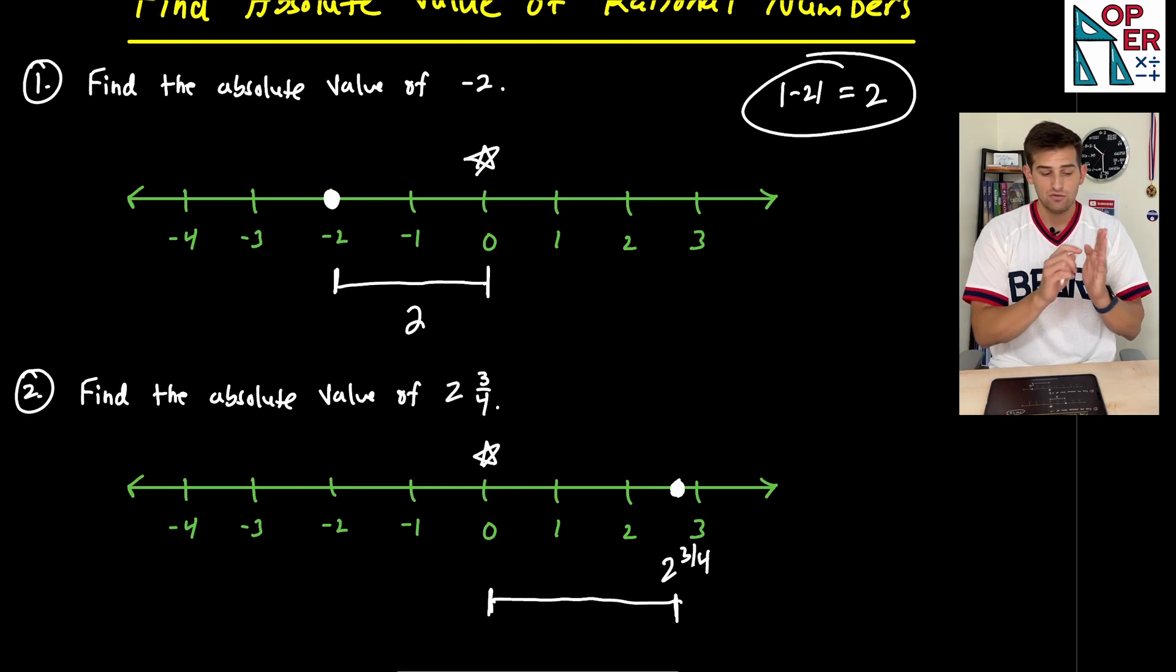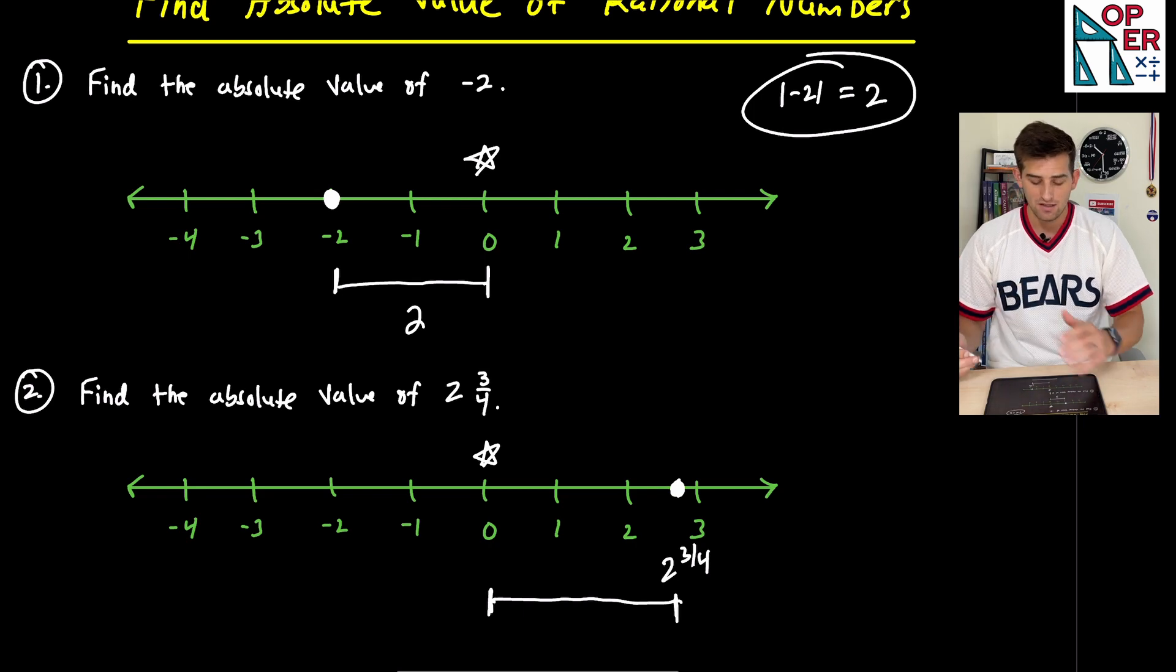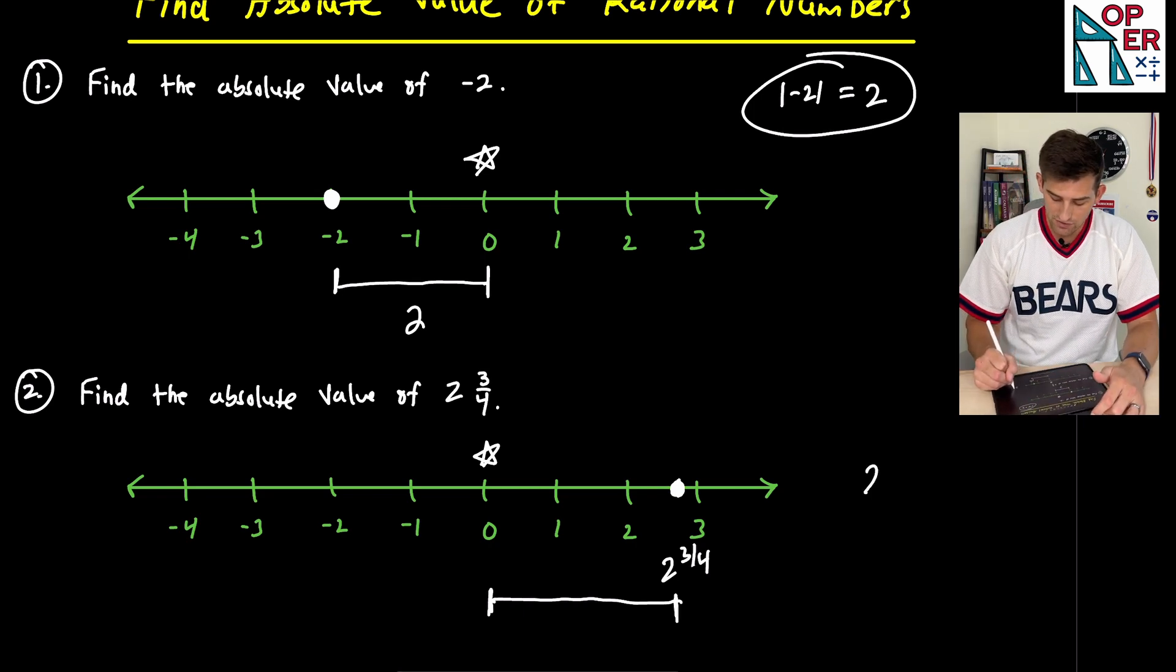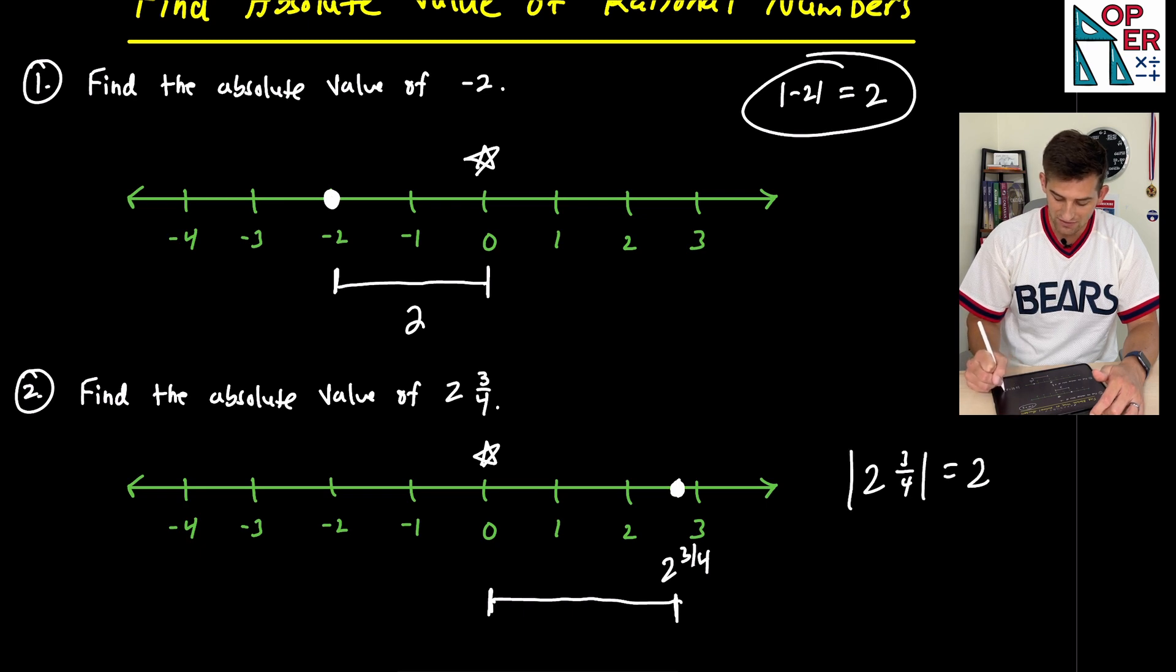We start at zero, we go to one, we go to two, and then we're another three fourths of the way down our number line. So the absolute value of two and three fourths would simply be two and three fourths.